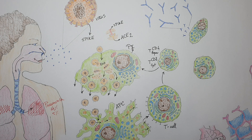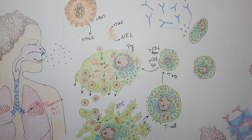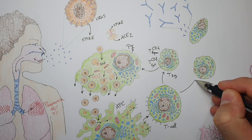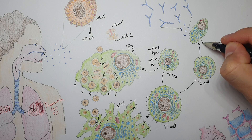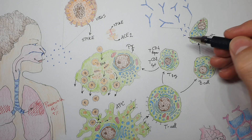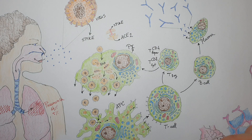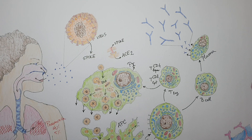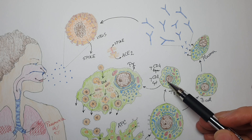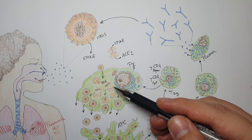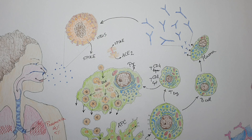There are also T-regulatory cells that control the reaction so it doesn't go too wild. T-cells also activate B-cells. When B-cells get activated, they convert into plasma cells, which produce antibodies. These antibodies are specifically produced to block the spike protein. The cytotoxic T-cells destroy the factories producing the virus, while the antibodies block all circulating virus particles from entering other cells, and in this way the infection stops and the virus is eliminated.